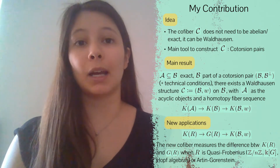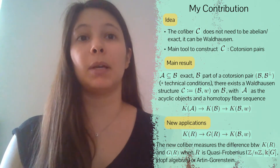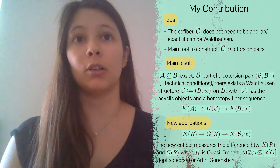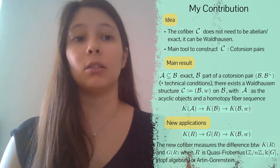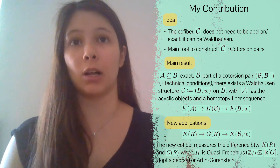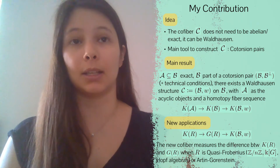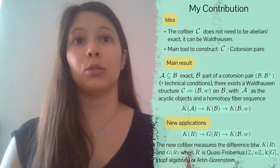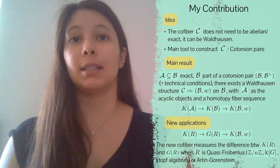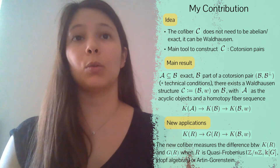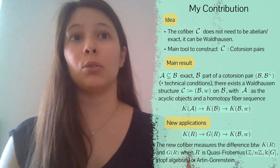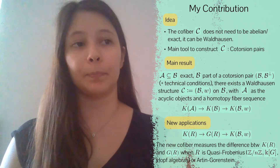The alternative I propose is based on the idea that the co-fiber we're looking for doesn't really need to be an abelian or an exact category — it can be a Waldhausen category instead. The main tool I use to construct this Waldhausen category is that of cotorsion pairs, which is an algebraic tool mainly used in relative homological algebra.